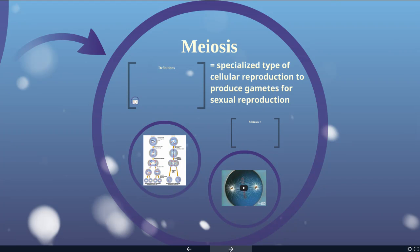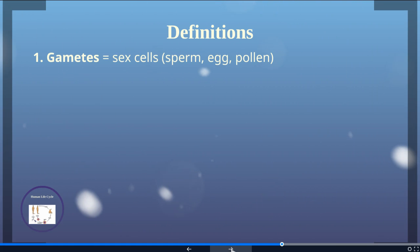The next process we want to tackle is meiosis. Meiosis is a very specialized kind of cellular reproduction that produces gametes and allows us to be ready for sexual reproduction. Our first definition is gametes — these are the sex cells: sperm and egg in animals, and pollen is related to sperm in plants.